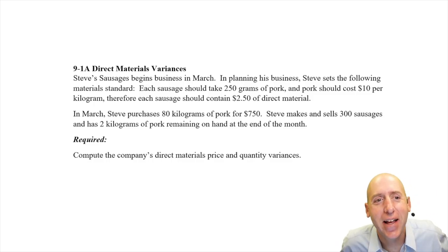Let's take a look at 9.1a direct materials variance question. Steve's Sausages begins business in March. In planning his business, Steve sets the following materials standard. Each sausage should take 250 grams, that's 0.25 kilograms.